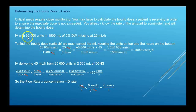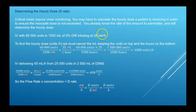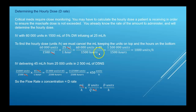We have 60,000 units in a 1,500 milliliter bag of dextrose — that's our on hand. Our infusion rate is 25 milliliters per hour. Take the flow rate in milliliters per hour and multiply by the concentration as units per milliliter. The milliliters cancel; multiply across the top and bottom, reduce the fraction, and you get units per hour — the D rate.